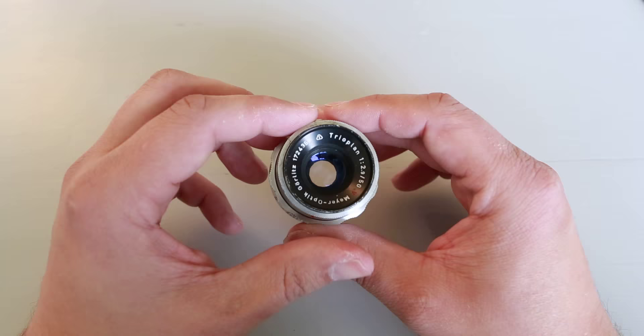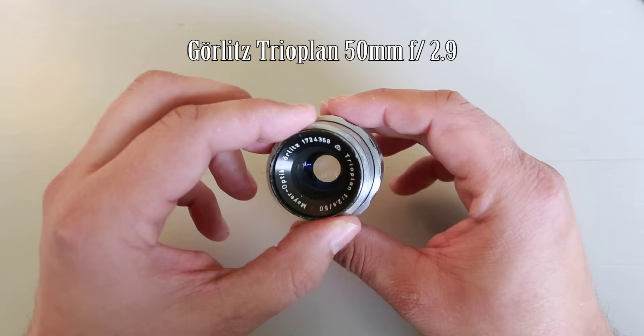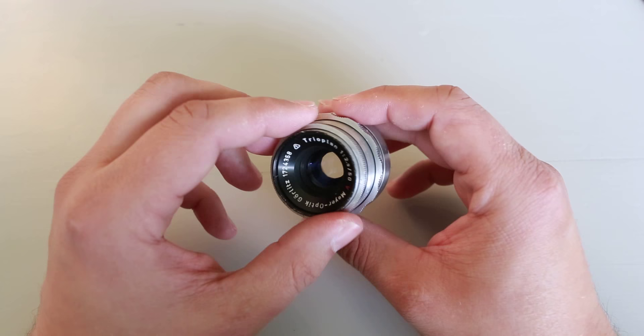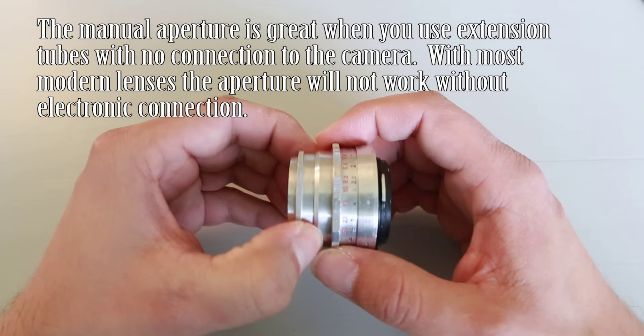It's a German lens from Mayer Optics which still exists today. It's called Gerlitz Trioplane and it's a 2.9 50mm lens. It's all manual of course, you can adjust the aperture here on the front of the lens and you have the focus here.